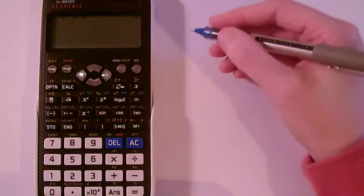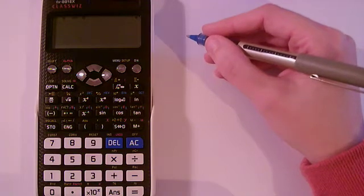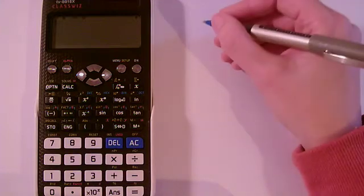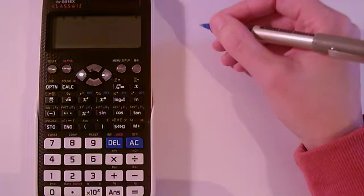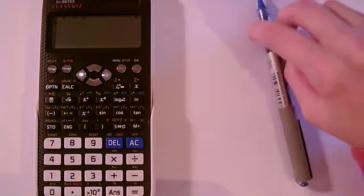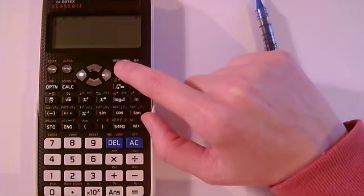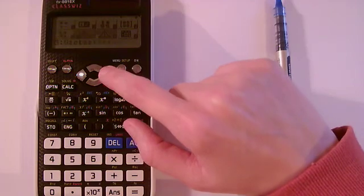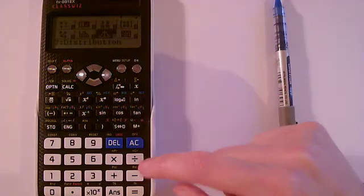We're going to talk about how to use the new ClassWiz Casio calculator to solve problems involving the binomial distribution. There are two functions on this new calculator that we can use. I'm going to go into option number seven, which is the distributions option.